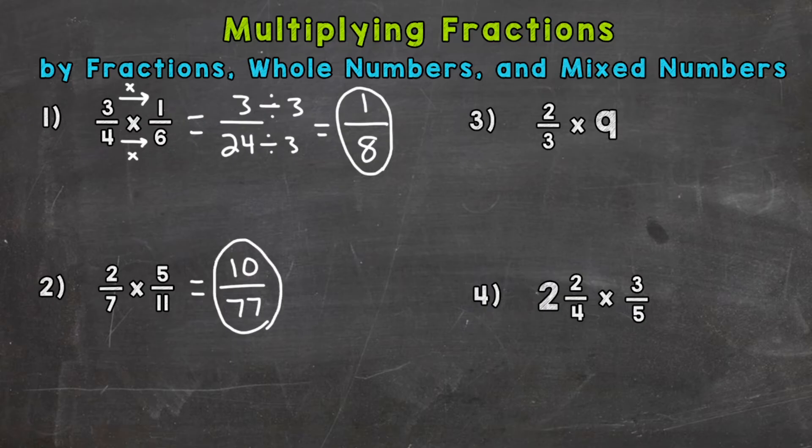Number three we have a fraction times a whole number. So what we need to do here, let's rewrite our problem. We have two thirds times nine. So we need to convert nine to a fraction here. So we have a top and a bottom, a numerator and a denominator. And it's really simple with whole numbers. All you need to do is put it over one. So whenever you have a whole number put it over one. And it's still equivalent to nine. So that's a fraction equivalent to nine. We didn't change the problem at all. We just converted nine to a fraction. So it has a numerator and a denominator.